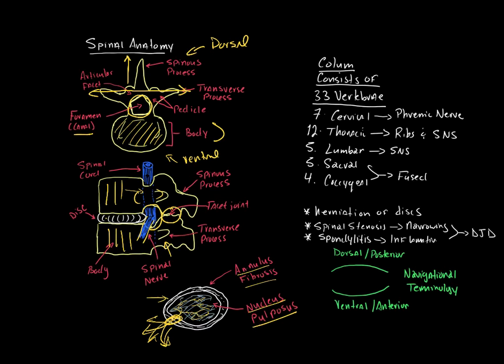The spinal column consists of 33 vertebrae, but the sacral and coccygeal vertebrae are fused, so you don't have the classic spinal root appearance — it looks more like spaghetti at the bottom of the spinal cord, branching out. The cervical, thoracic, and lumbar vertebrae — 7, 12, and 5 respectively, plus 5 sacral and 4 coccygeal — share a common structure for how the peripheral nervous system exits the central nervous system.